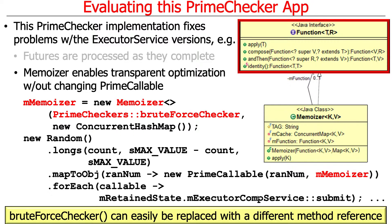The second big win is that we have this transparent optimization without changing the prime callable. Here's the function — prime callable expects a function, memoizer implements the function interface, and therefore we can use the memoizer transparently here without having to change what prime callable does. That's kind of why we have memoizer inheriting from function.